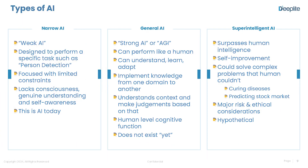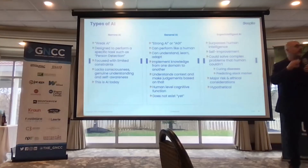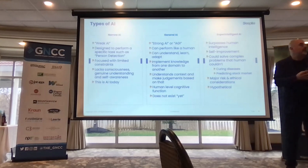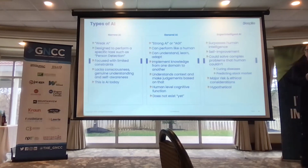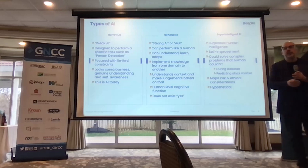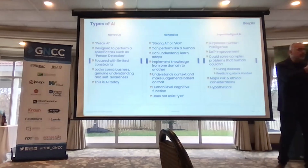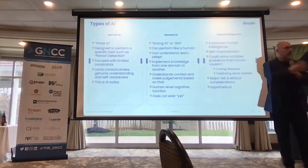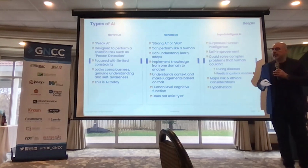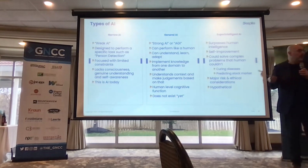There are three categories of AI: narrow AI, general AI, and superintelligent AI. Narrow AI is what's found in AI systems today — algorithms and systems trained for a specific purpose. Face ID on your iPhone is a very narrow use case. A security camera doing people counting is a specific use case. Autonomous vehicles have hundreds of very narrow AI use cases. Narrow AI is basically where we are today — a very focused, application-based approach.